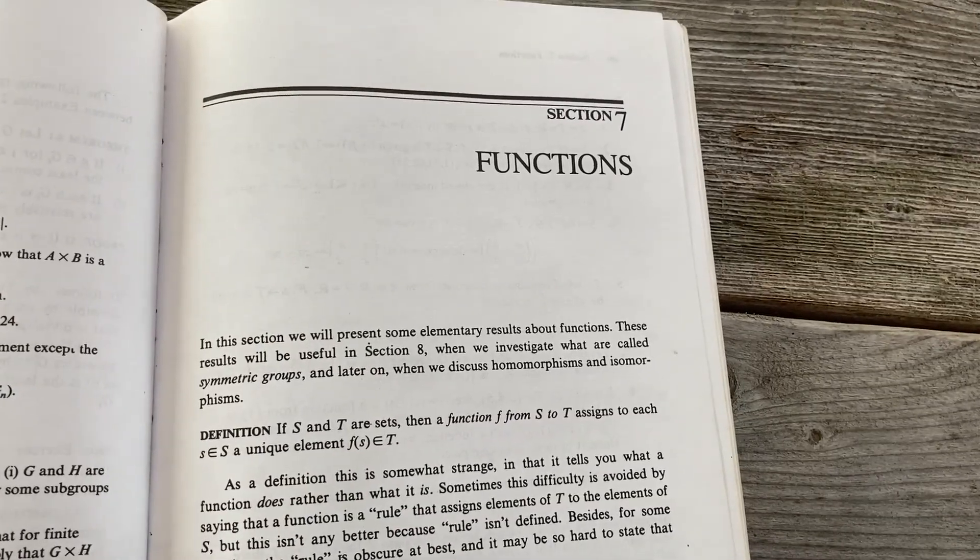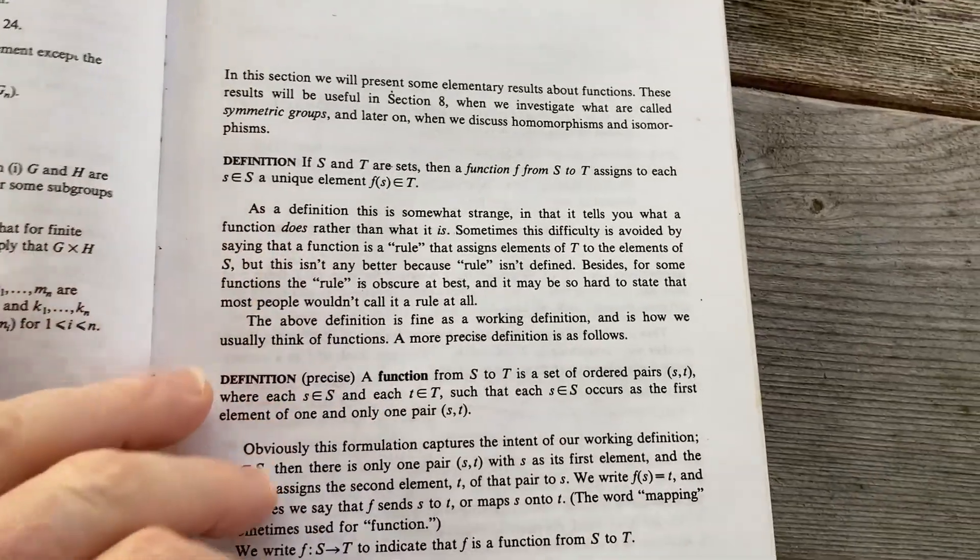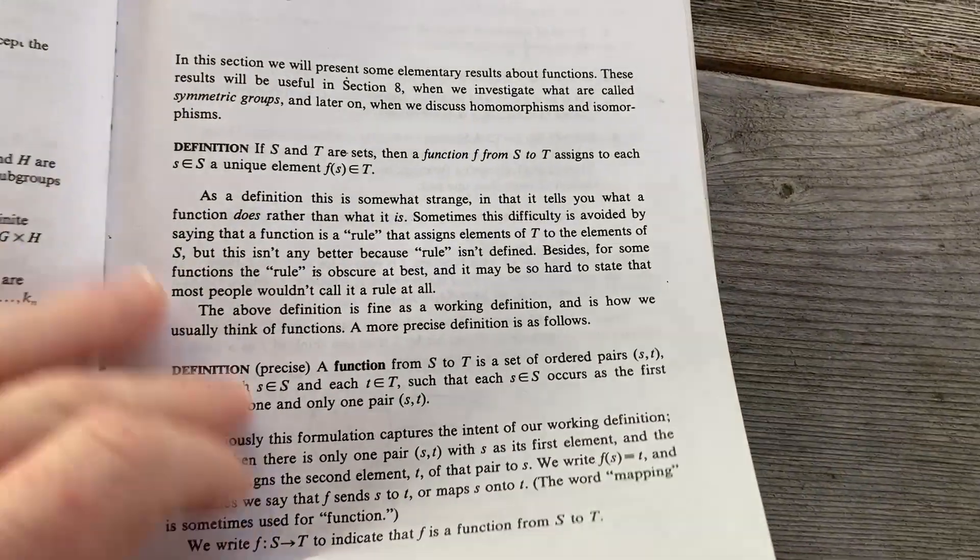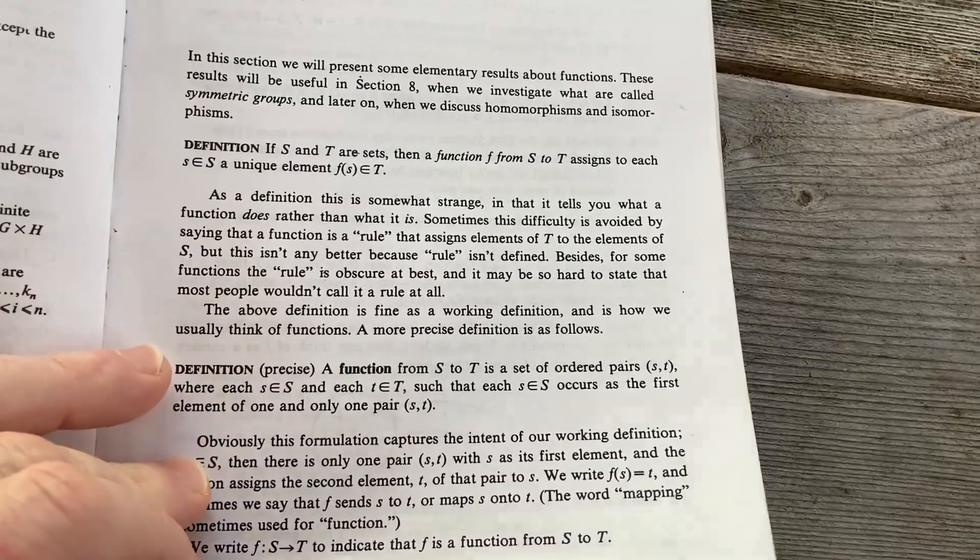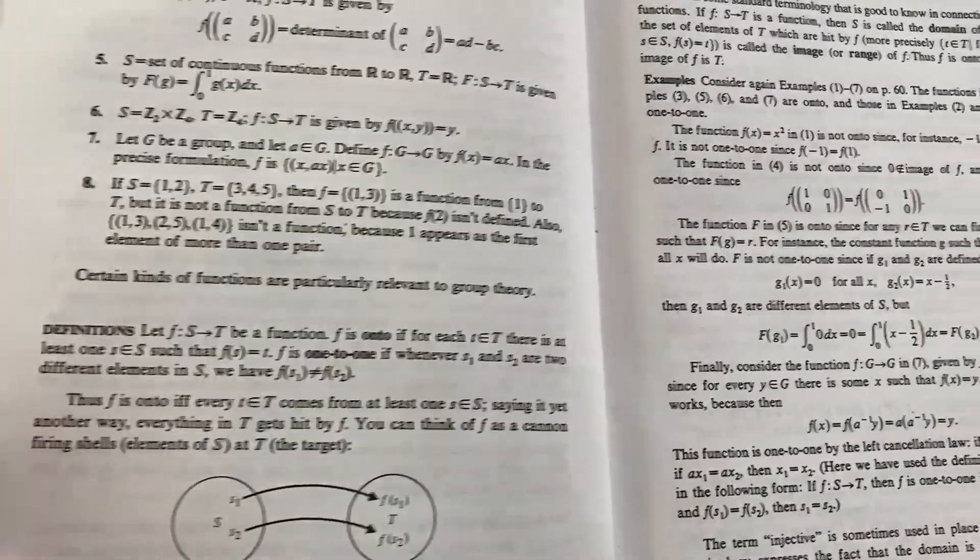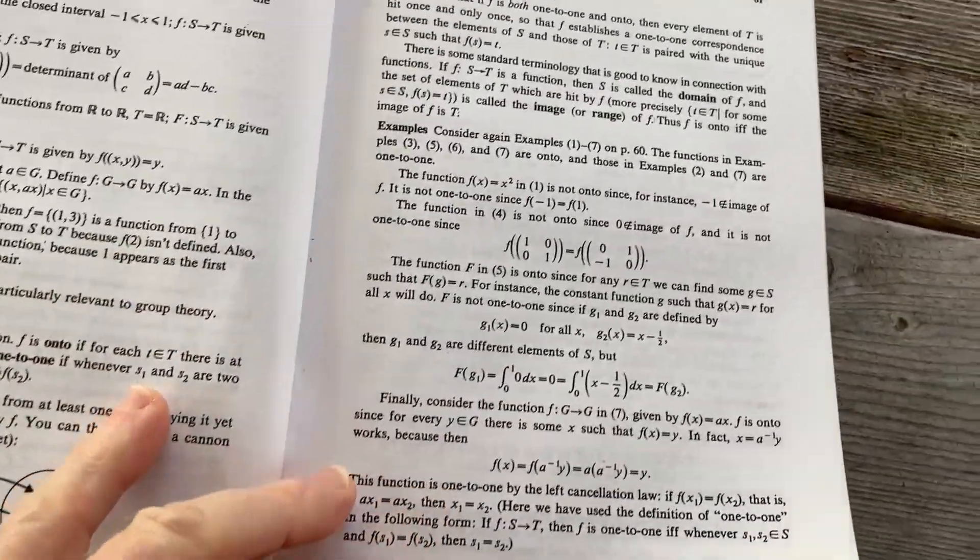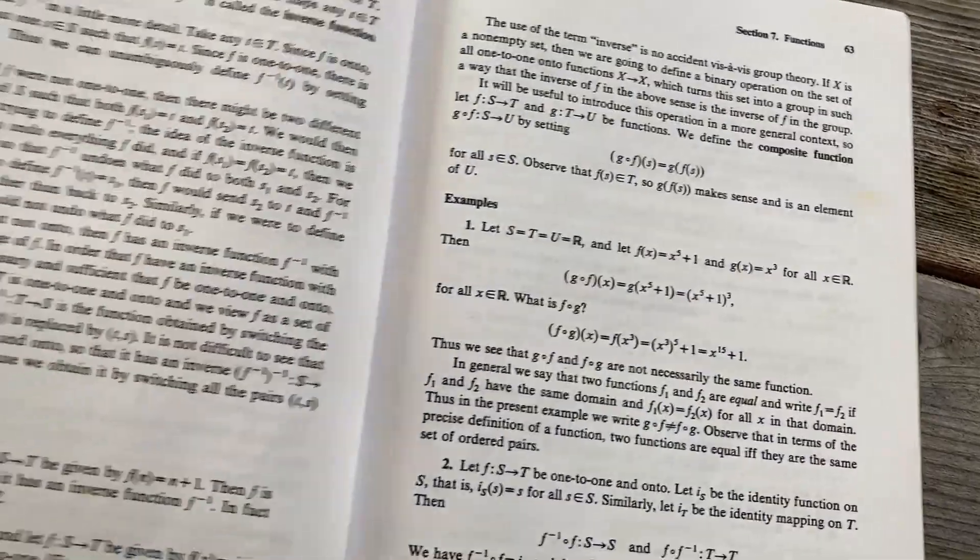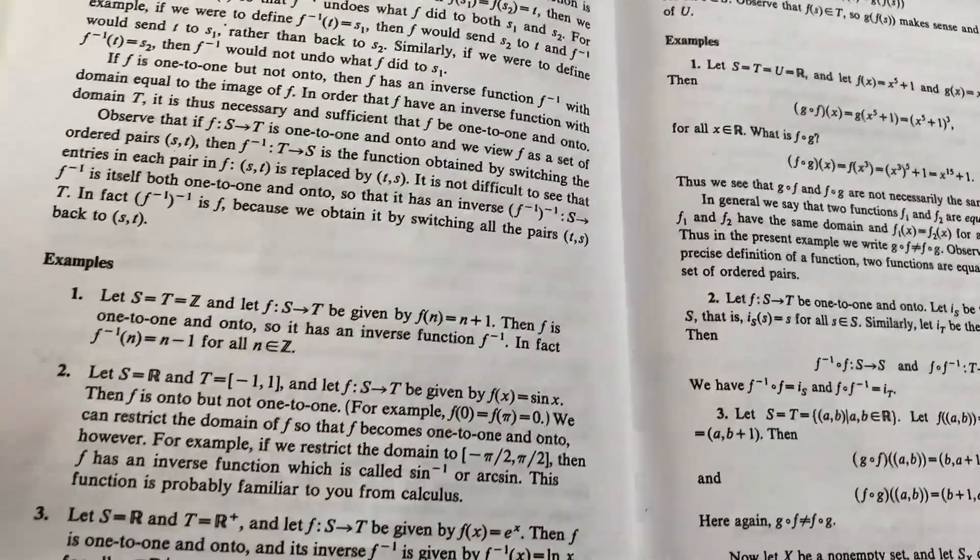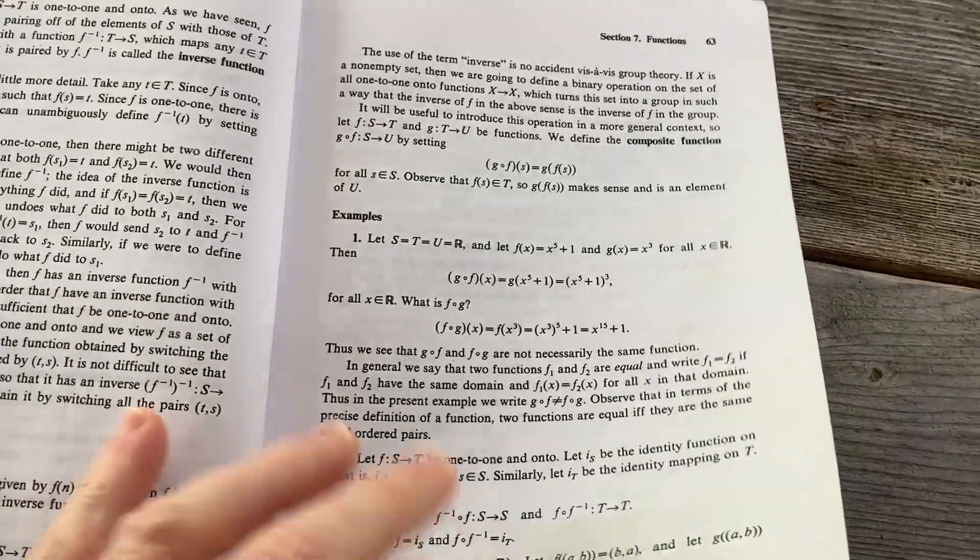Another sign that we're looking at a very beginner-friendly book is that he has an entire section on functions. So he starts by defining a function, and he does it two different ways here. Then they talk about one-to-one functions and onto functions and bijections.